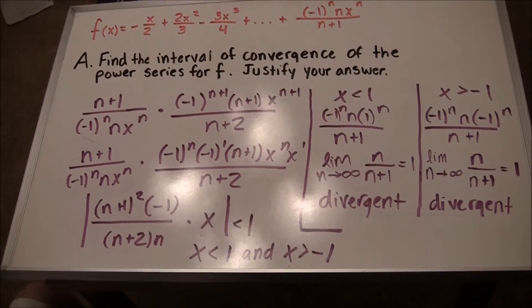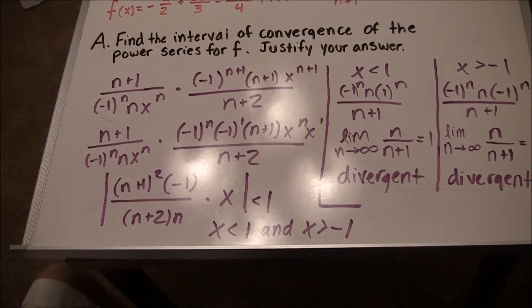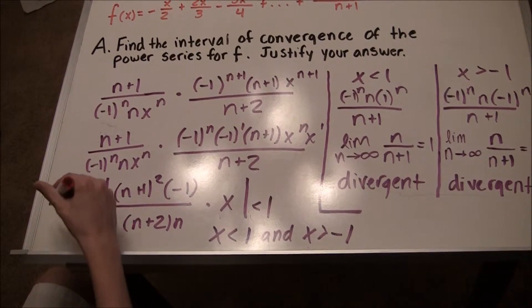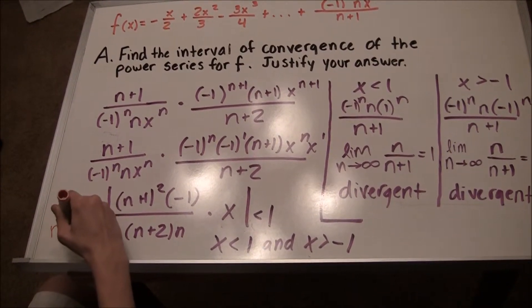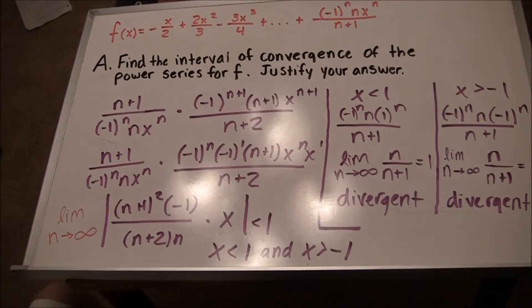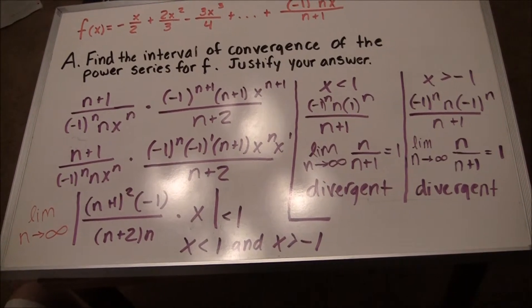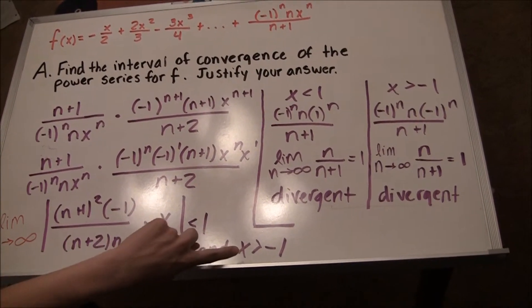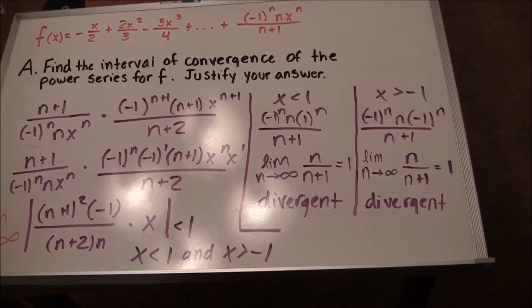After completing the appropriate mathematics steps, the final answers simplify to as follows, as the limit approaches infinity. As n approaches infinity, it simplifies to 1, leaving the series convergence as the absolute value of x. The absolute value of x is then set as less than 1 and greater than negative 1, making the interval of convergence negative 1 is less than x is less than 1.